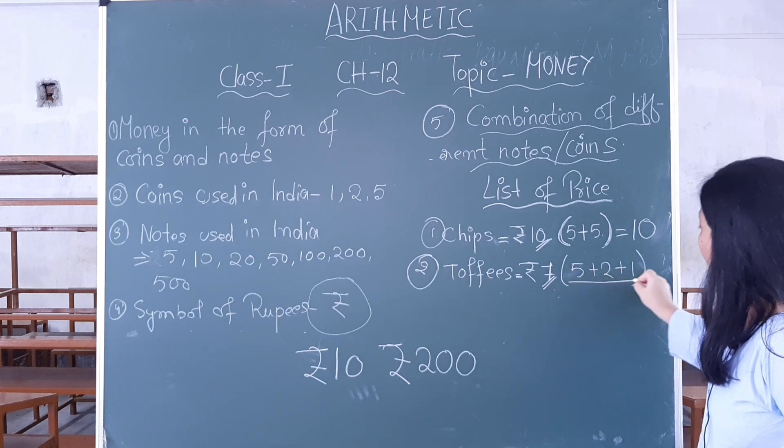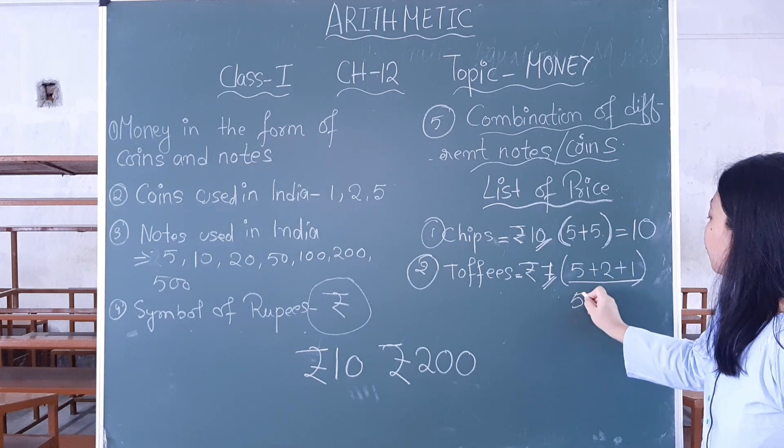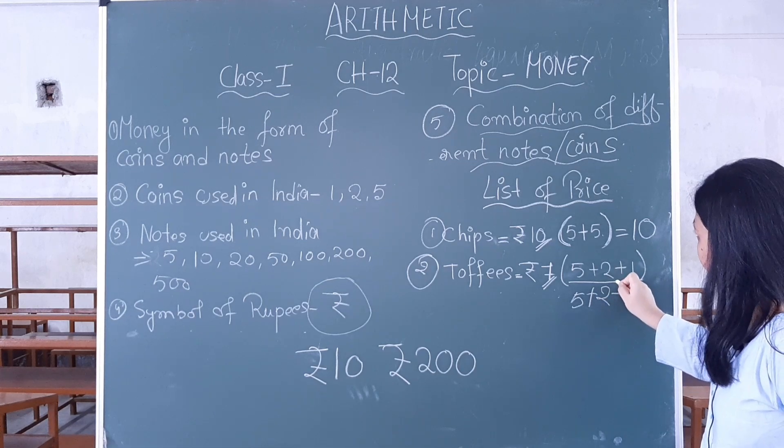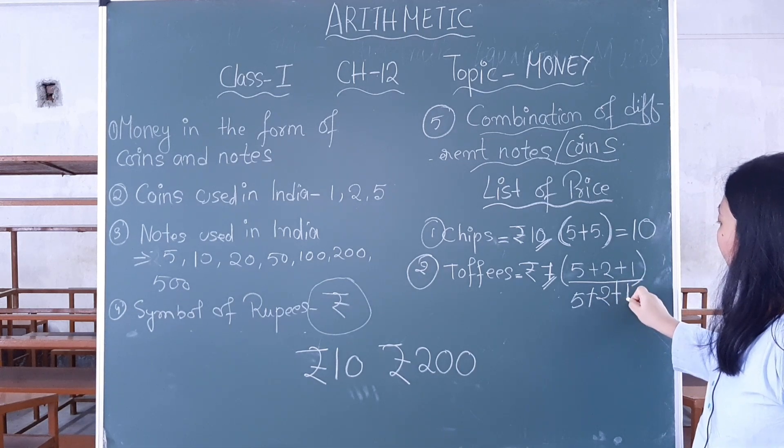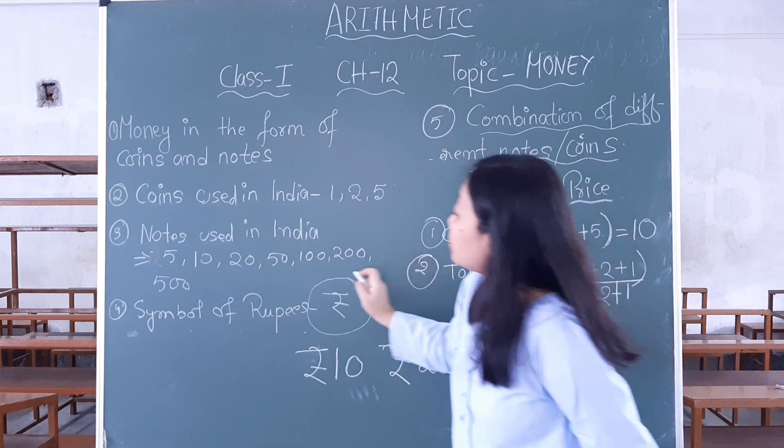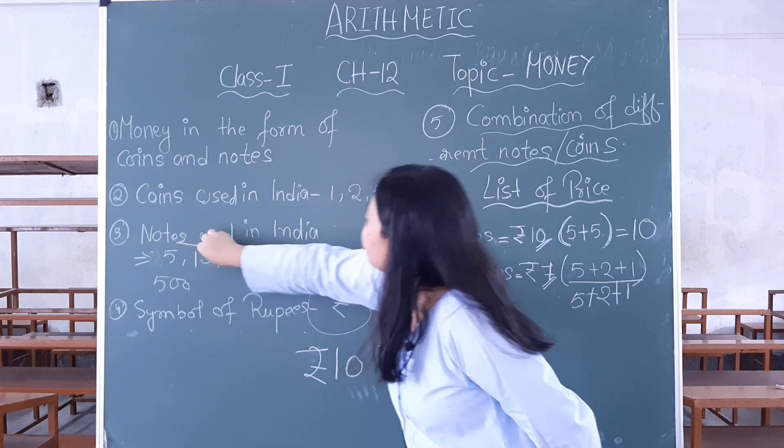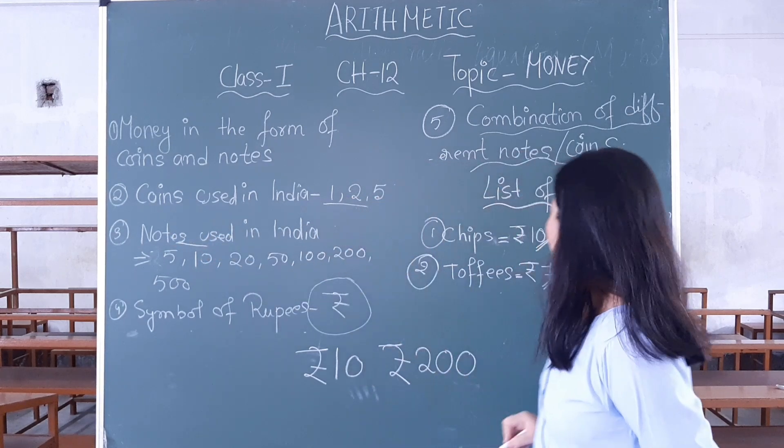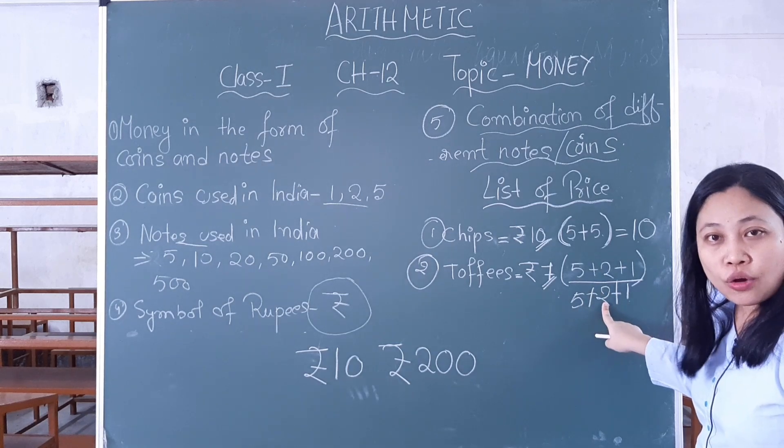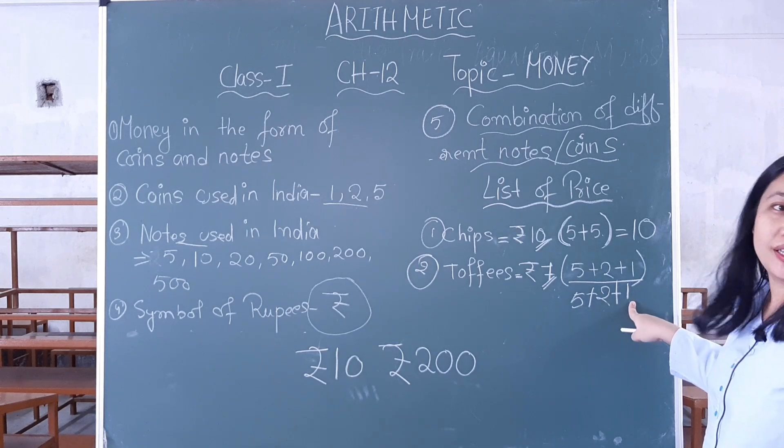So you can break it into 5 rupees plus 2 rupees plus 1 rupee. We don't have 1 and 2 rupee notes, but we have them in coins. So we will use a 5 rupee note, a 2 rupee coin, and a 1 rupee coin.